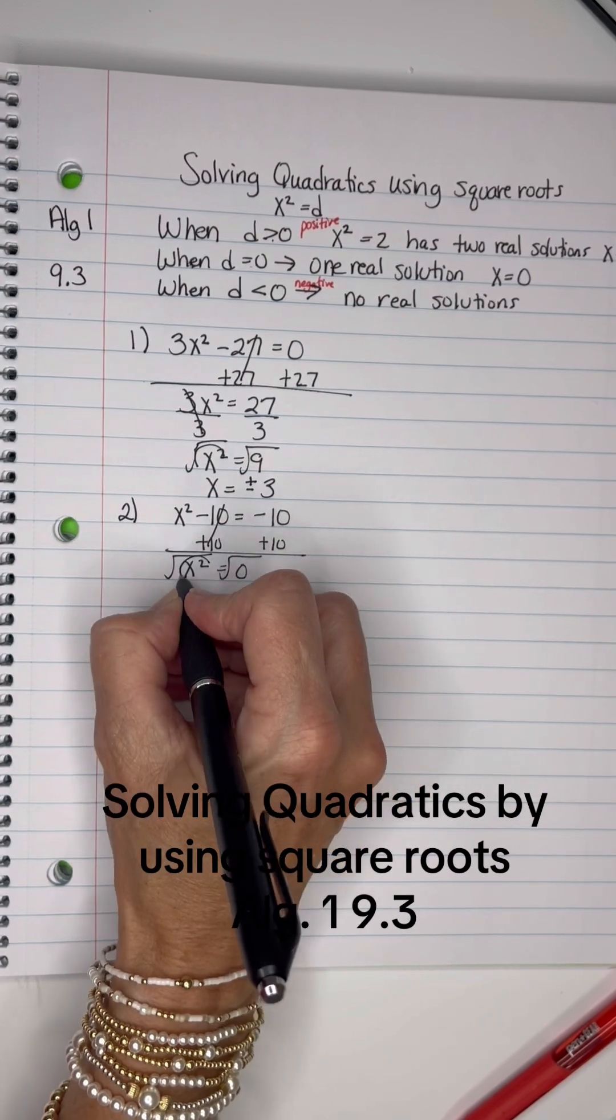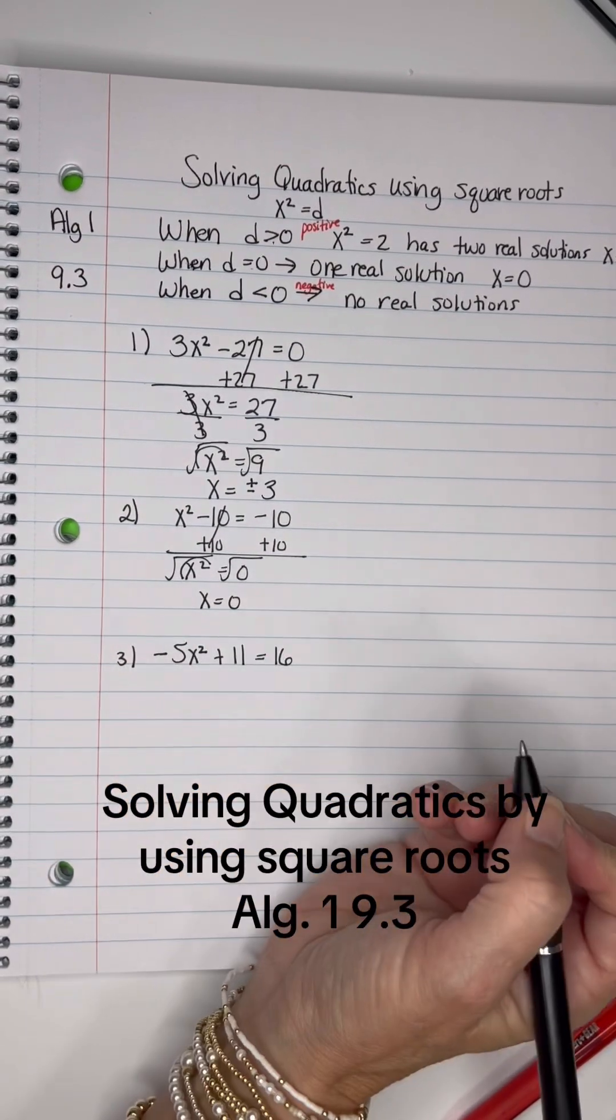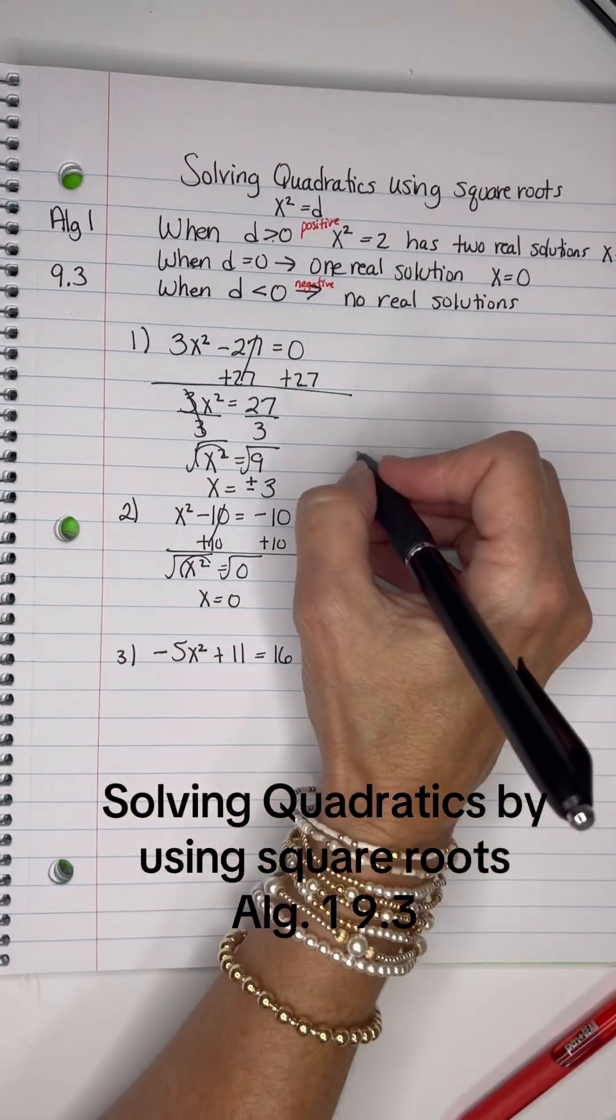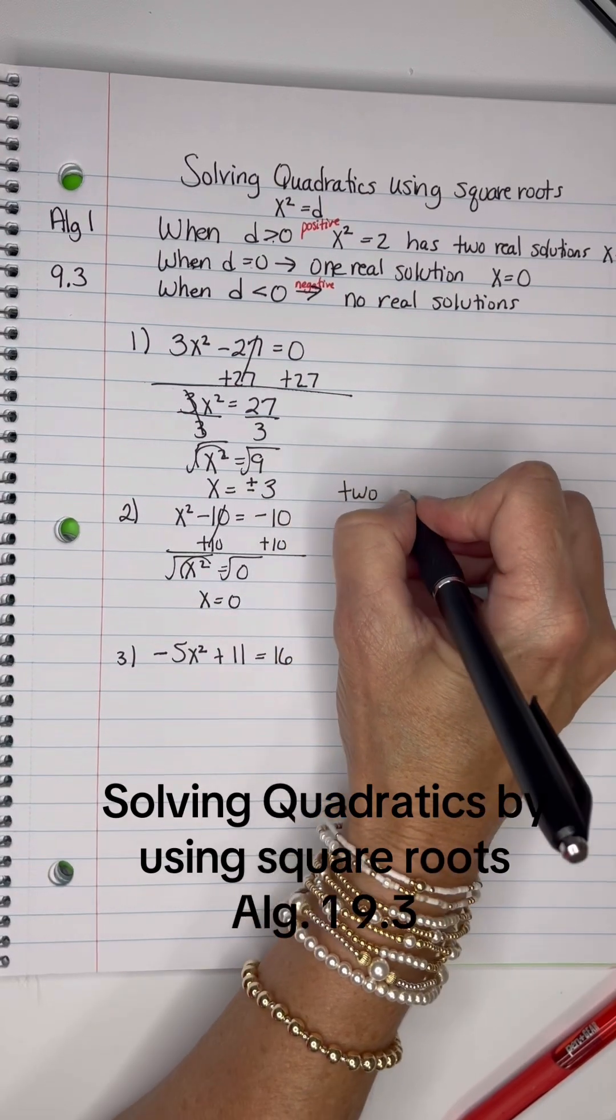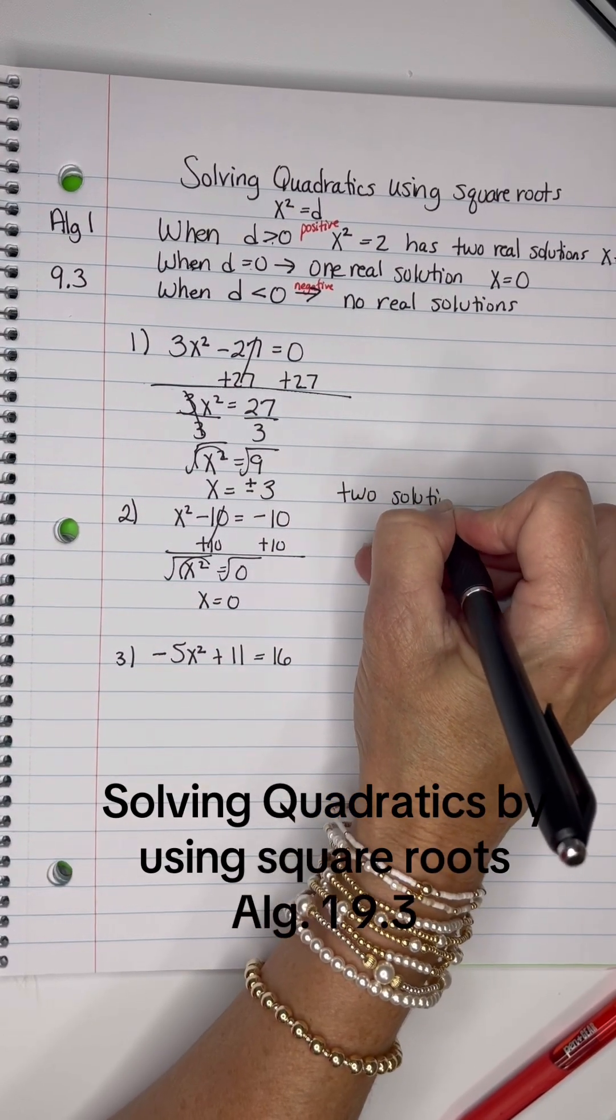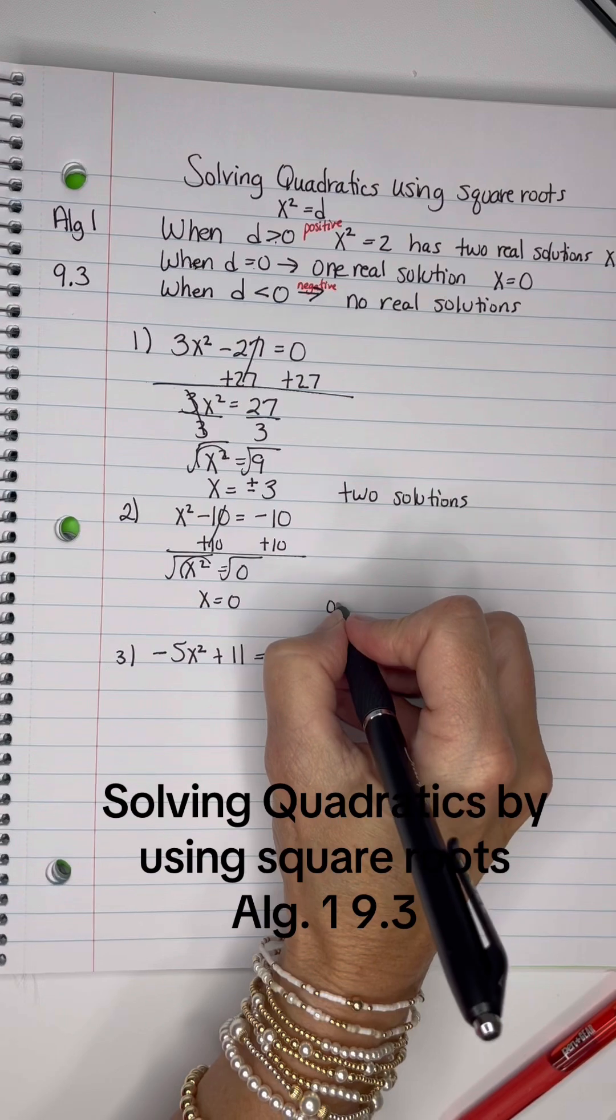In other words, if you take the square root of both sides, you're just going to get zero. One solution. So this has two solutions, and this has one solution.